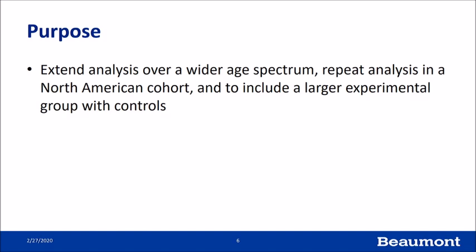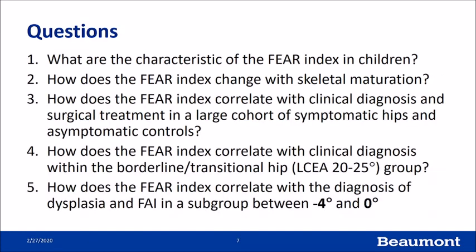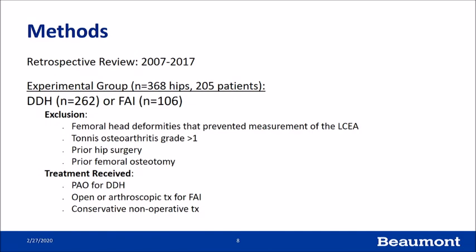The purpose of this study was to extend the analysis over a wider age spectrum. As a pediatric orthopedic surgeon, I have access to many children's x-rays. We wanted to repeat the analysis in a North American cohort with a larger experimental group and large control group. We sought to answer five questions: what are the characteristics of the FEAR index in children, how does it change with skeletal maturation, how does it correlate with clinical diagnosis and surgical treatment, how does it correlate within the difficult borderline transitional hip group, and how does it correlate with dysplasia and FAI in the gray zone between minus four and zero degrees.